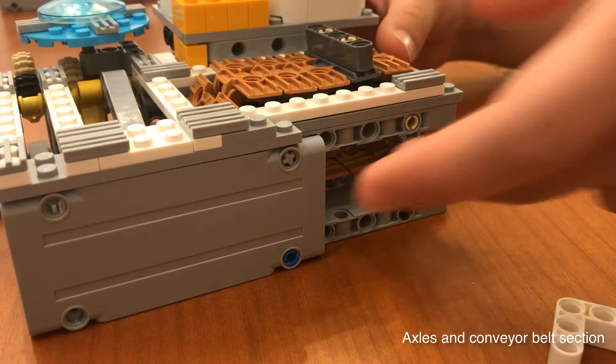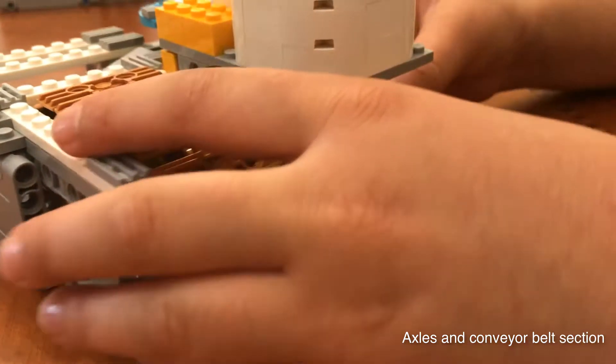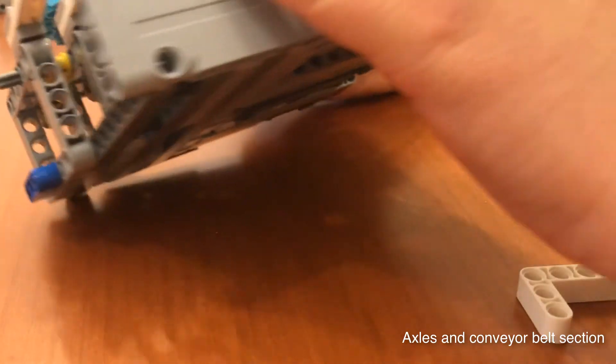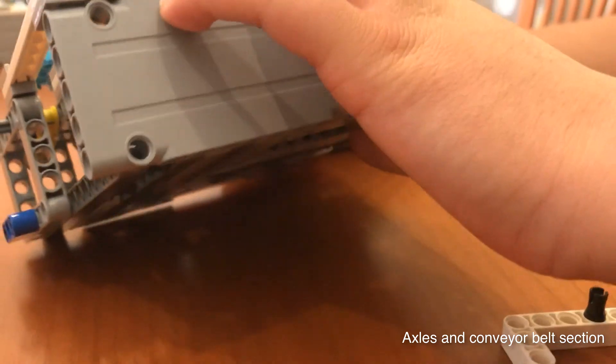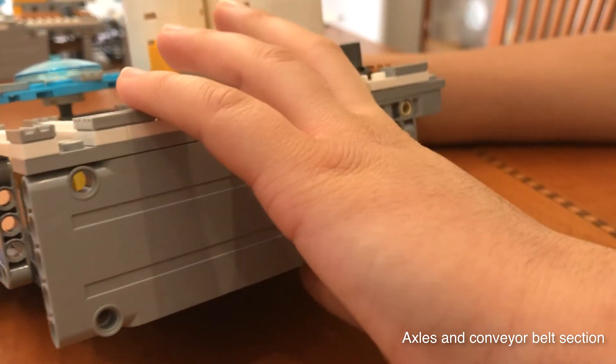Next, there is an axle under the conveyor belt that connects it to the gear system here. We are going to push this axle in to make sure that it is tight.